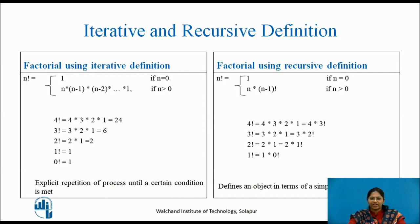For example, to calculate 4 factorial: 4 is multiplied to 4 minus 1, that is 3; again 3 is multiplied to 3 minus 1, that is 2; and 2 is multiplied to 2 minus 1, that is 1, which results to 24. To find the factorial of 3: 3 is multiplied to 3 minus 1, that is 2; 2 is again multiplied to 2 minus 1, that is 1, which gives the result as 6.